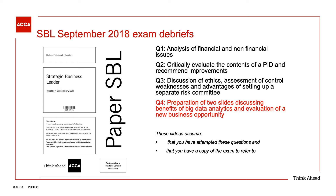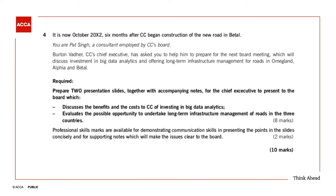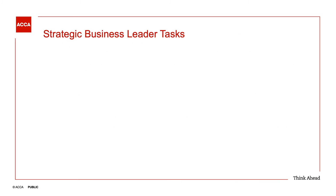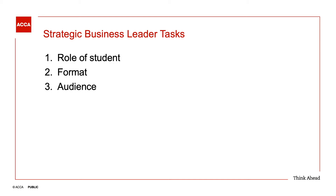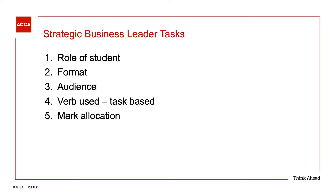Before we start looking at the question, I'm assuming you've attempted it and have a copy of the exam question to hand. There's a set of six practical steps that I think we should follow on every Strategic Business Leader question. They are: what role are you asked to play? What format is the answer required in? Who are we addressing, i.e. who's our audience? What verb is being used and what's it asking us to do? How many marks are being awarded? And what are the professional skills marks being awarded for? If we always ensure we ask these six questions before developing our answer plan, the chances of getting something wrong will be minimized.